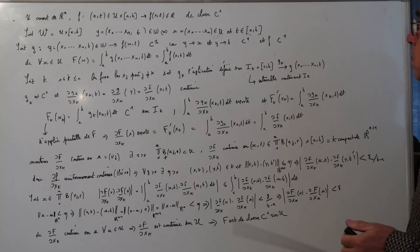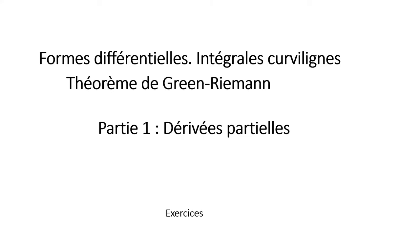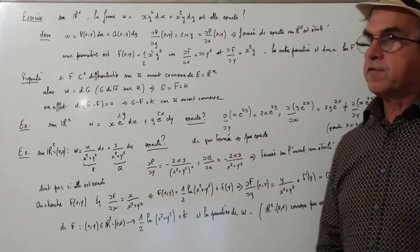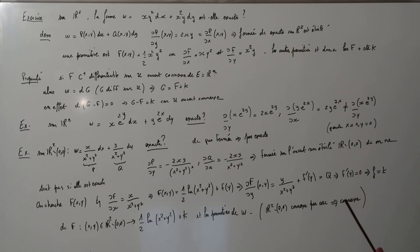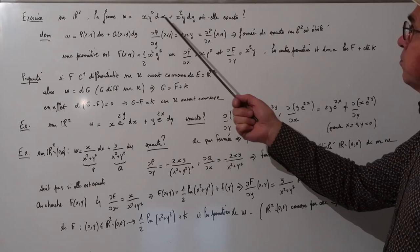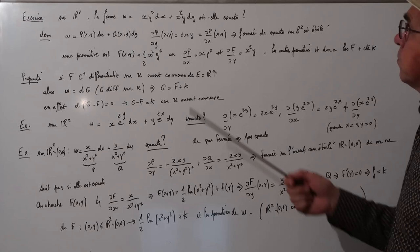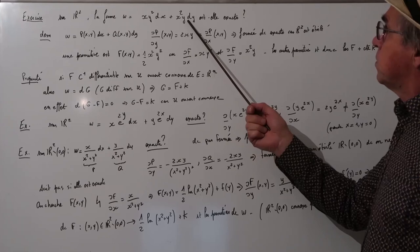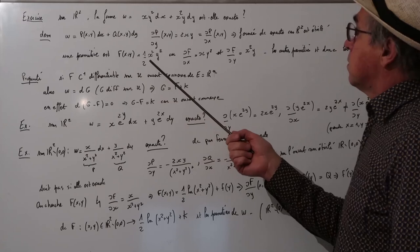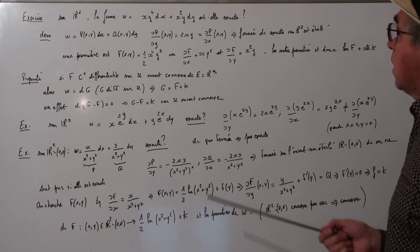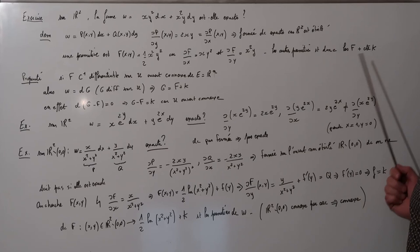Exercice sur R² : la forme ω = xy² dx + x²y dy est-elle exacte ? On a P = xy² et Q = x²y. On calcule ∂P/∂y = 2xy et ∂Q/∂x = 2xy. Donc elle est fermée, et donc exacte puisque R² est étoilé. On cherche une primitive sous la forme F = ½x²y², ce qui vérifie ∂F/∂x = P et ∂F/∂y = Q. Toutes les primitives sont F = ½x²y² + constante.